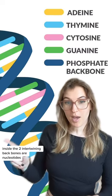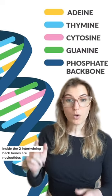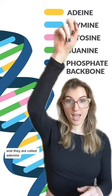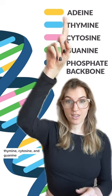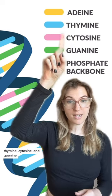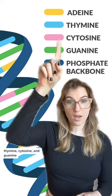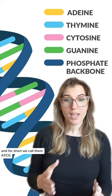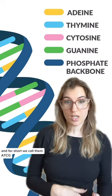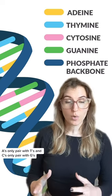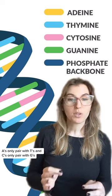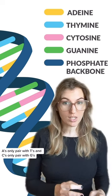Inside the two intertwining backbones are nucleotides, and they're called adenine, thymine, cytosine, and guanine. For short, we call them ATCG. A's only pair with T's, and C's only pair with G's.